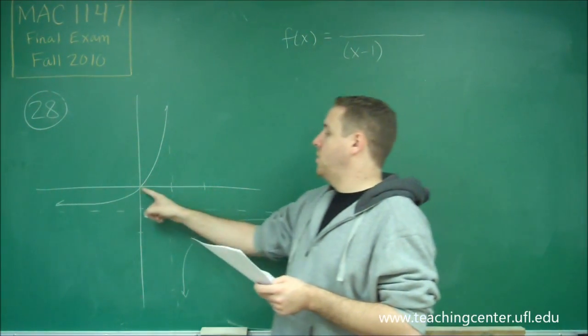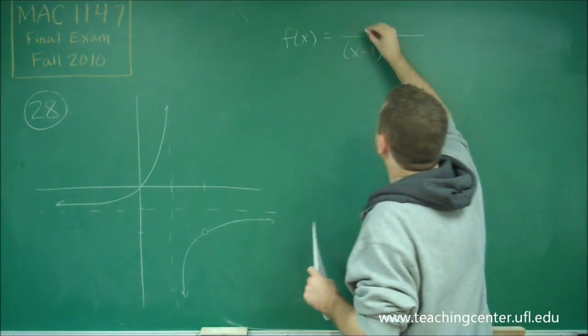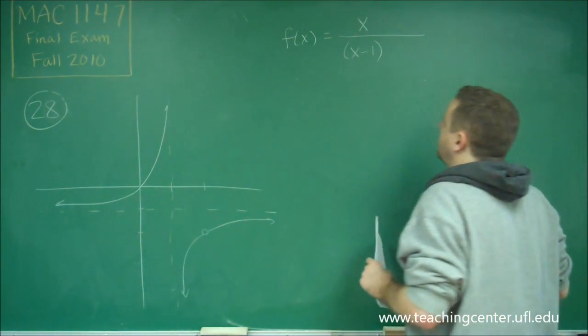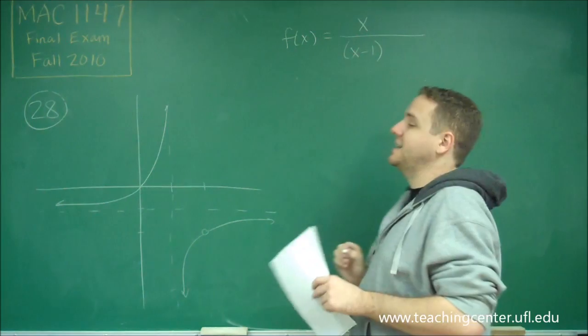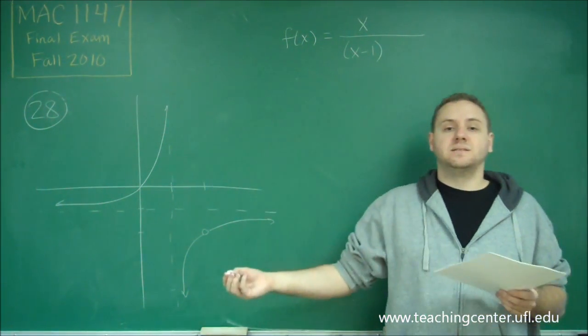From this zero that goes through the origin, we know that we should have an x value in the numerator that's just x, because when we plug in 0, we're supposed to get 0.